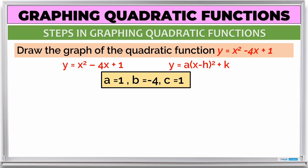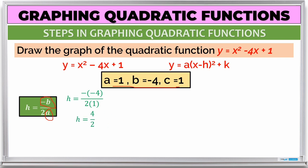Now we apply the formula. For h: h = -b/2a = -(-4) / (2×1) = 4/2 = 2. So h = 2.